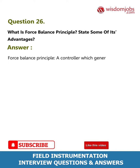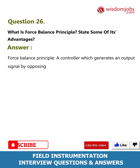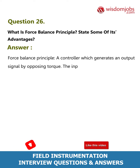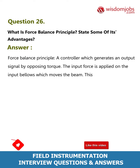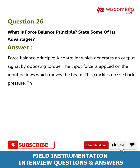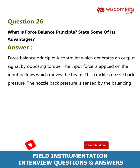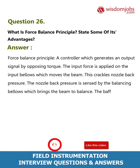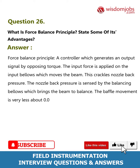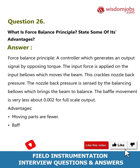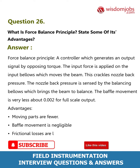Question 26: What is the force balance principle? State some of its advantages. Answer: A force balance controller generates an output signal by opposing torque. The input force is applied on the input bellows, which moves the beam. This changes the nozzle back pressure, which is sensed by the balancing bellows, bringing the beam to balance. The baffle movement is very small, about 0.002 inches for full scale output. Advantages: moving parts are fewer, baffle movement is negligible, and frictional losses are less.